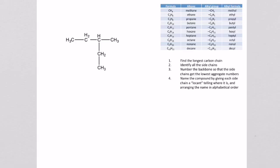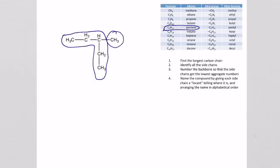In the next example, we're being a bit tricky. It looks like we have the same four-carbon backbone, but in fact the longest carbon chain is a different one — it has five carbons, making this a pentane. There's just one methyl group on the side. It doesn't really matter which end we number from: one, two, three, four, five. The name of this compound is 3-methylpentane, and the line structure shows the five-carbon backbone with a methyl group on carbon three.